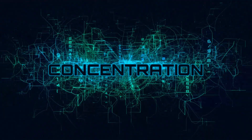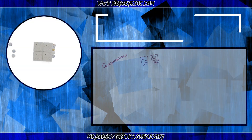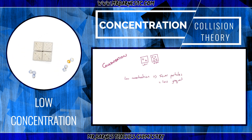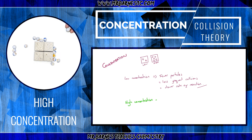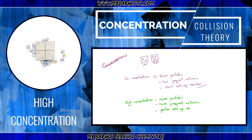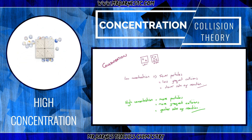The second factor we're going to look at is concentration. If we start off with a low concentration, you can see on my left here I've got very few particles — only seven marbles in there — therefore there are going to be less frequent collisions, which means a slow rate of reaction. However, if I increase the concentration it means I add more particles in. Notice my volume has stayed the same. More particles means more frequent collisions per second, therefore a faster rate of reaction. Saying 'more frequent collisions' is going to get you the extra marks, so make sure you learn that phrase.